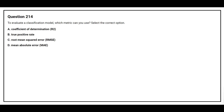Question number 214. To evaluate a classification model, which metric can you use? Select the correct option. Option A: Coefficient of determination. Option B: True positive rate. Option C: Root mean squared error. Option D: Mean absolute error. The correct answer is Option B, True positive rate.